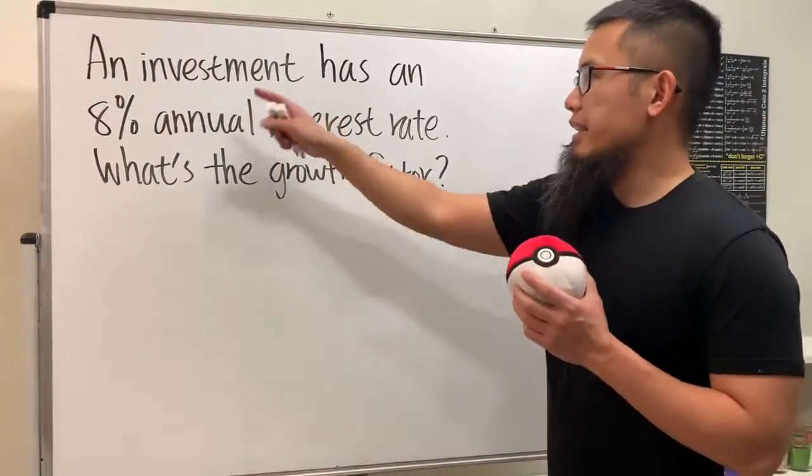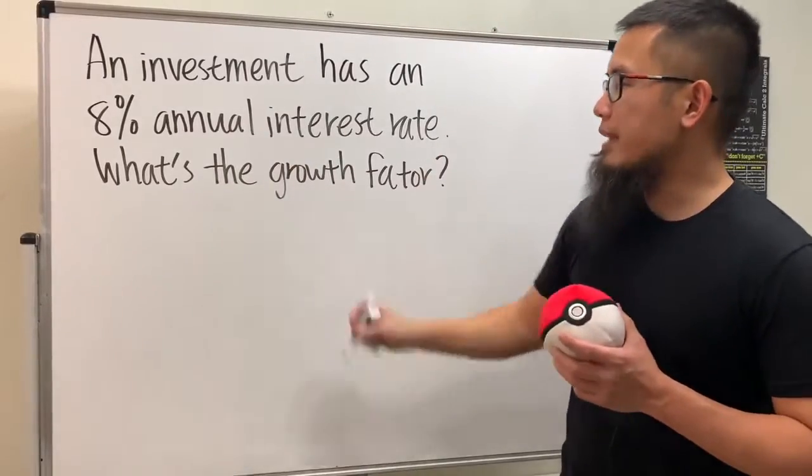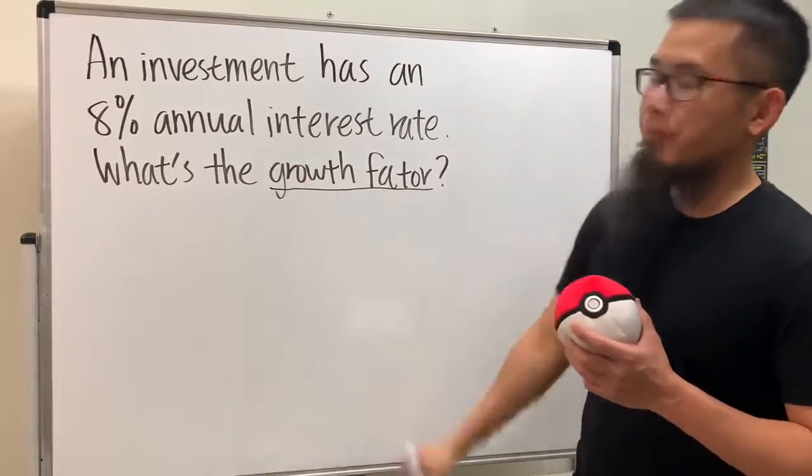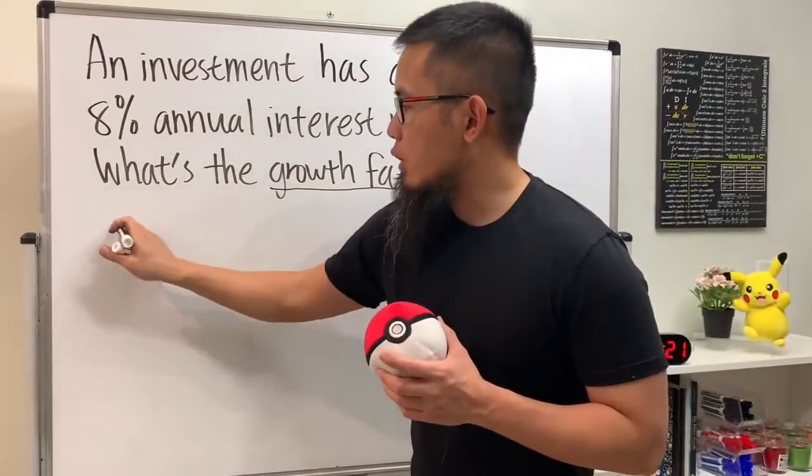Okay, for this question it says an investment has an 8% annual interest rate and we're going to find the growth factor. Whenever we are talking about the rate, we are going to first use the formula Q